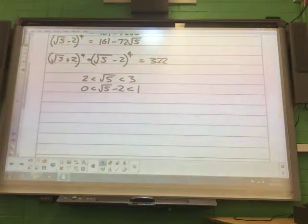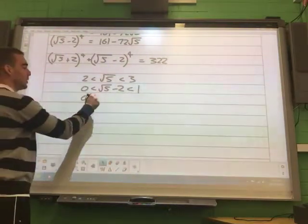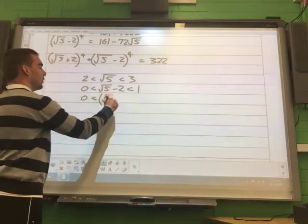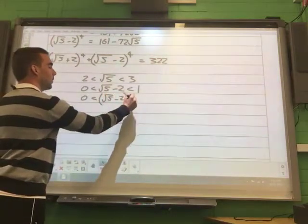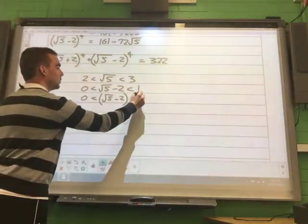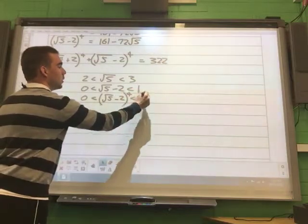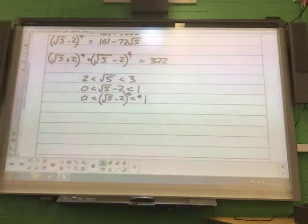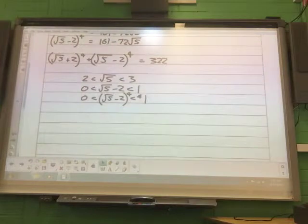So then I'm going to raise each of those three terms to the power of 4. So 0, which is less than root 5 take away 2 to the power of 4, which is less than 1 to the power of 4, which is just 1.